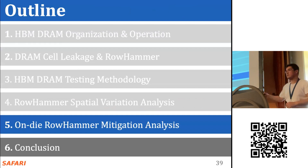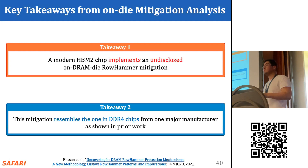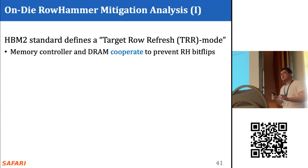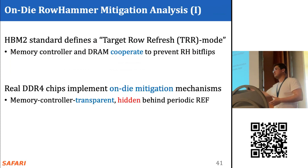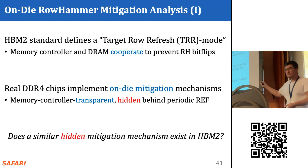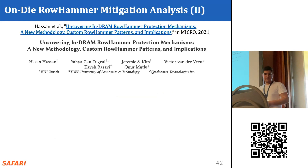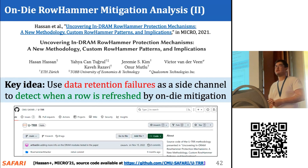We now describe our second analysis on on-DRAM-die mitigation mechanisms. Two key takeaways: the chip we test implements an undisclosed on-DRAM-die mitigation technique resembling one already found in real DDR4 chips. The HBM2 standard defines a target row refresh mode where the memory controller and the HBM DRAM chip collaborate to prevent bit flips. We also know real DDR4 chips implement undisclosed memory-controller-transparent on-DRAM-die mitigation mechanisms that take actions hidden behind the latency of a refresh operation. We use the methodology from prior work, where the key idea is to use data retention failures as a side channel to detect when a row is refreshed by an on-DRAM-die mitigation mechanism.